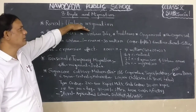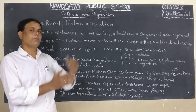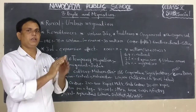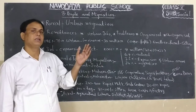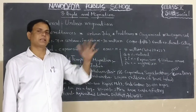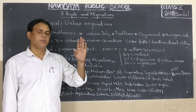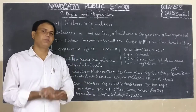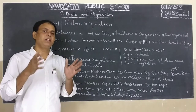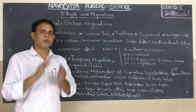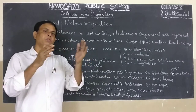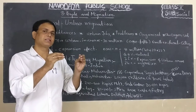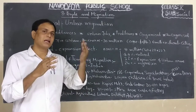When people migrate from rural to urban areas, they face many problems and struggles. Ramaya settled in the organized sector and got a government teacher job. But many people coming from rural areas are landless and do not have proper work in rural areas. When they come to cities and towns, they do small jobs and come under the unorganized sector.